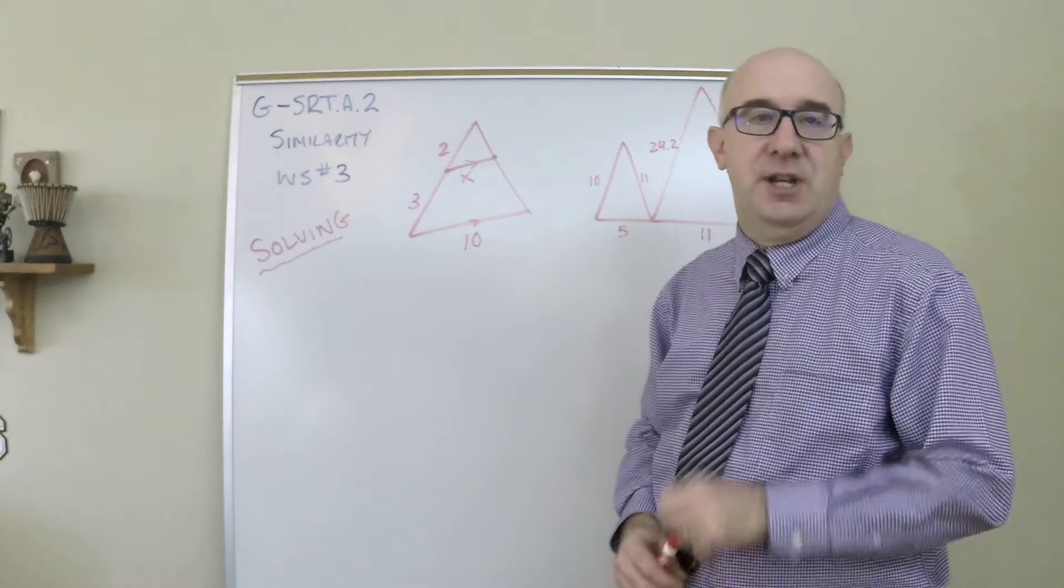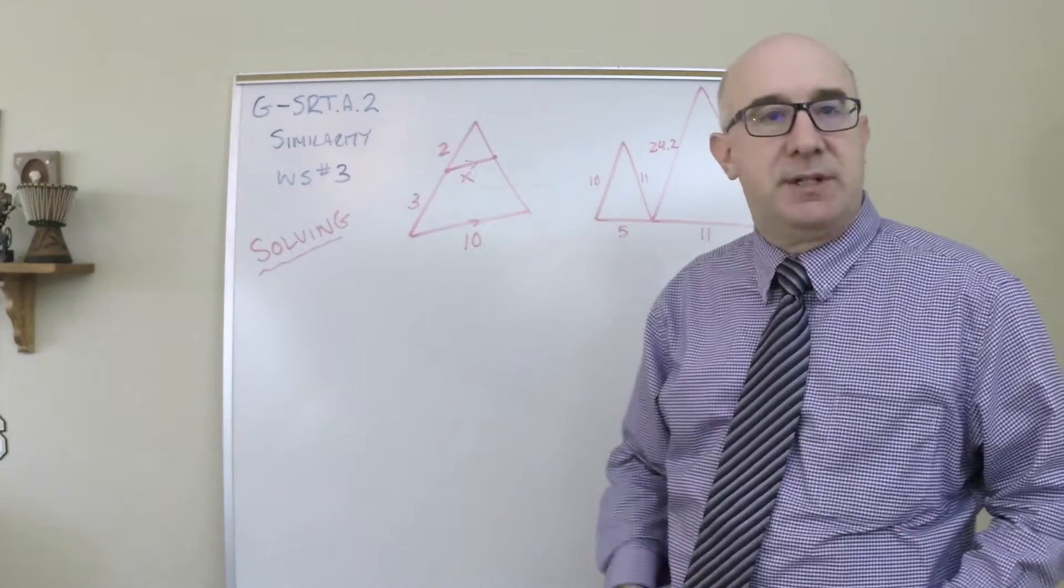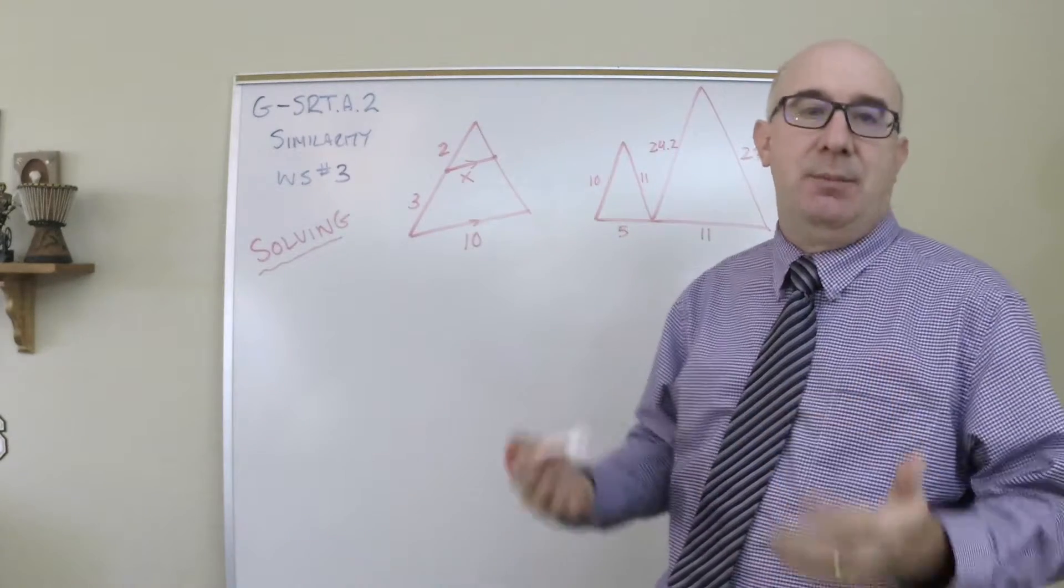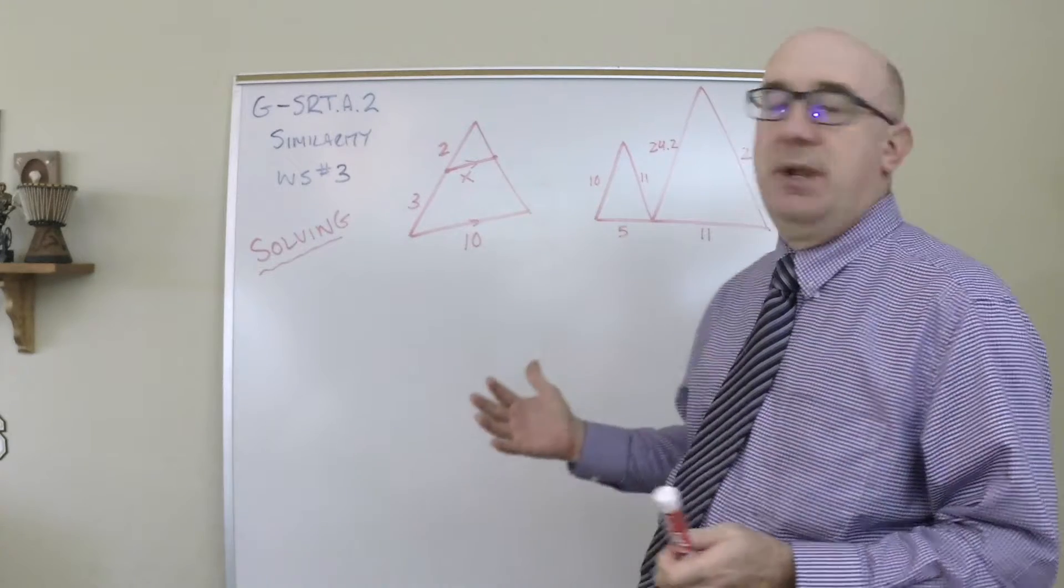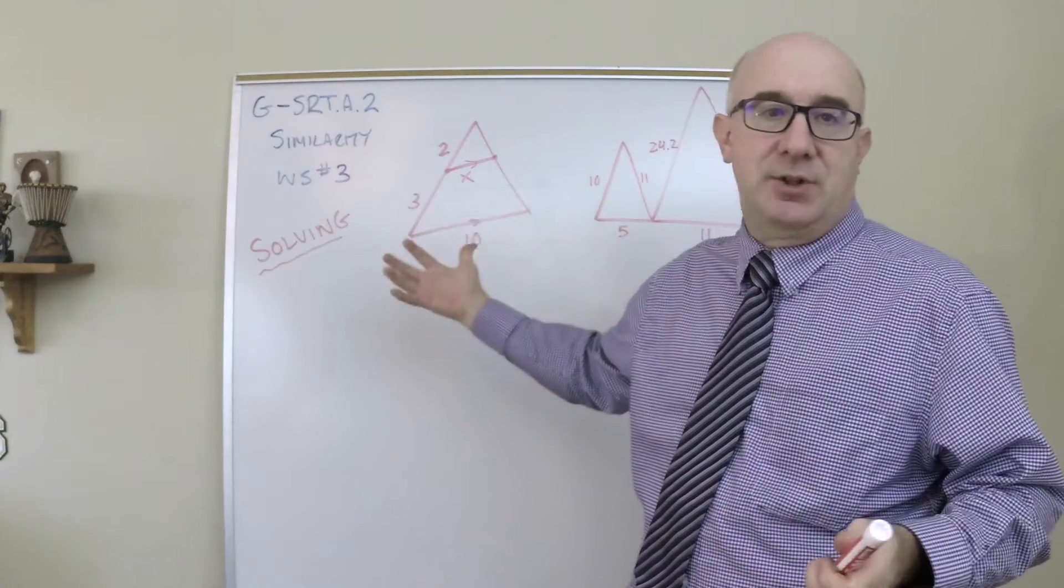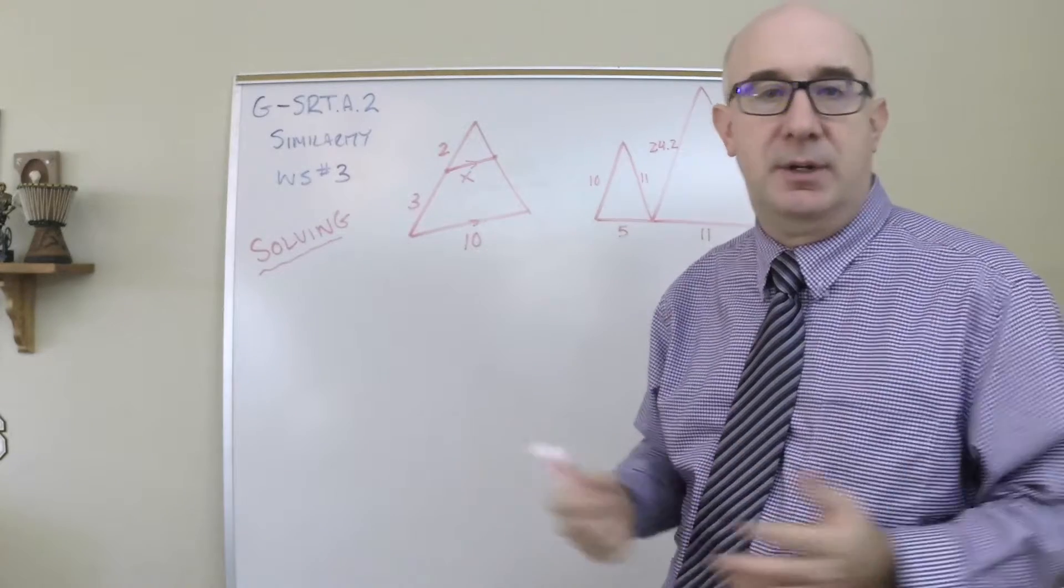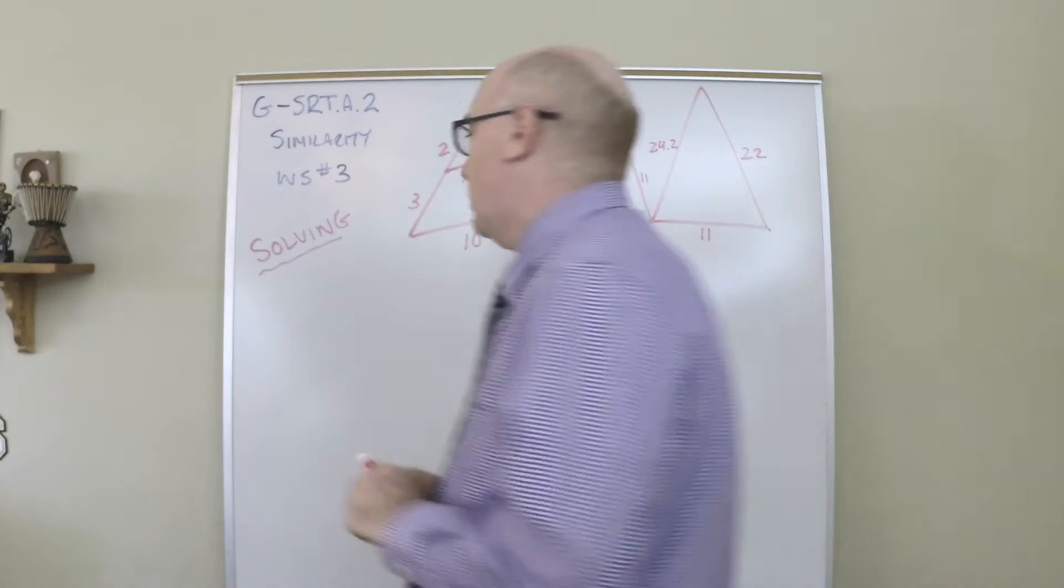Let's talk about GSRTA2, still working with similarity. This is worksheet three and deals with now that we've established the triangles are indeed similar. Usually the way that's established is that they'll tell you what triangles are similar like with a similarity statement or state that the ones below are similar.